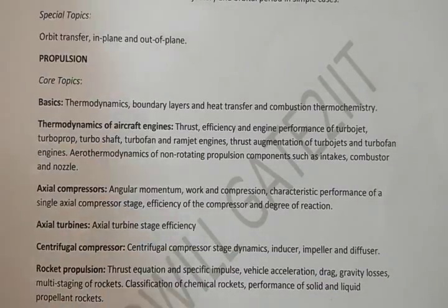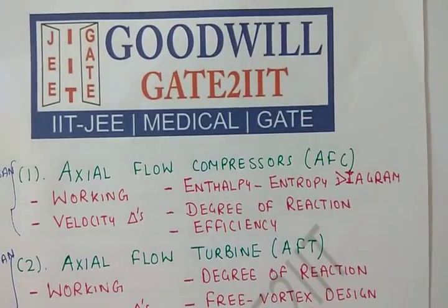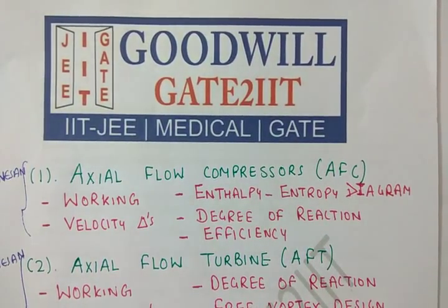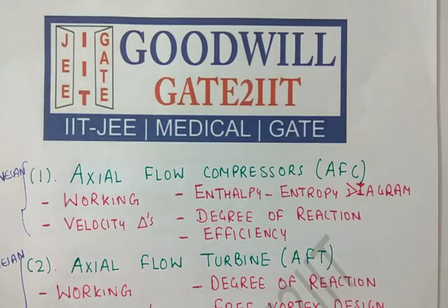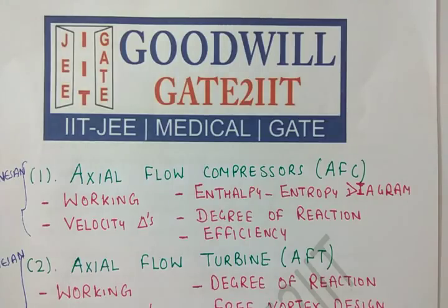The first unit we will start with is axial flow compressors. There are many topics to cover: working, construction, velocity triangles, enthalpy-entropy diagram, degree of reaction, and efficiencies — these are the core topics to always study and practice numerically. Apart from these, there are additional topics like work done factor, solidity factor, design parameters, stalling, surging, and different types of losses in axial flow compressors.